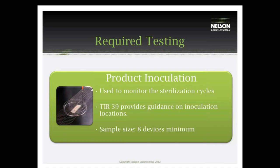Following the bioburden testing, we will take eight devices for a one cubic meter load and evaluate the devices, looking for the hardest-to-kill location. TIR-39 provides guidance on what type of inoculation locations to look for. Those include small lumens, mated surfaces — anything that's going to present a challenge for EO to penetrate. We will then inoculate the devices in as many locations as needed. Some devices may have three to four inoculation locations for a complex device, or just one depending on how difficult the product is to sterilize.